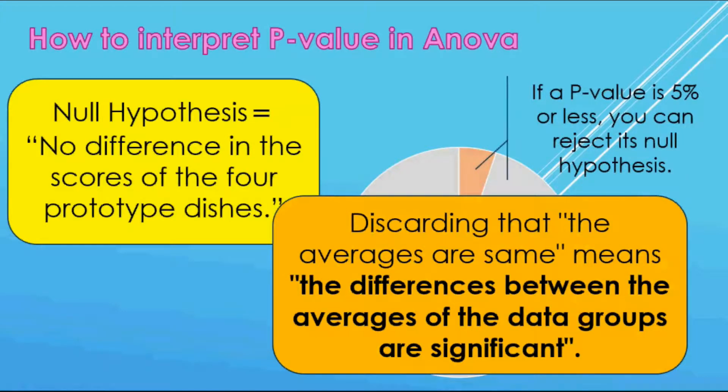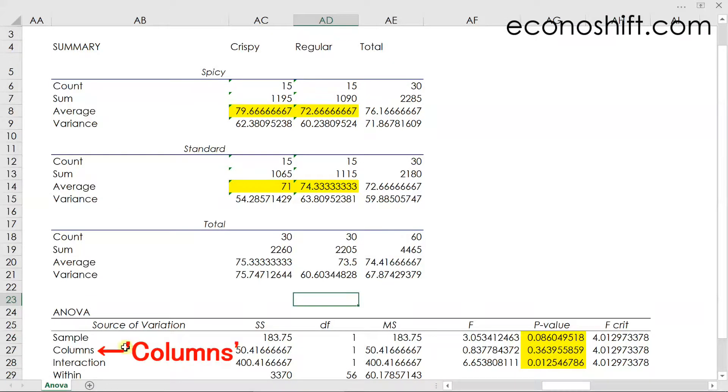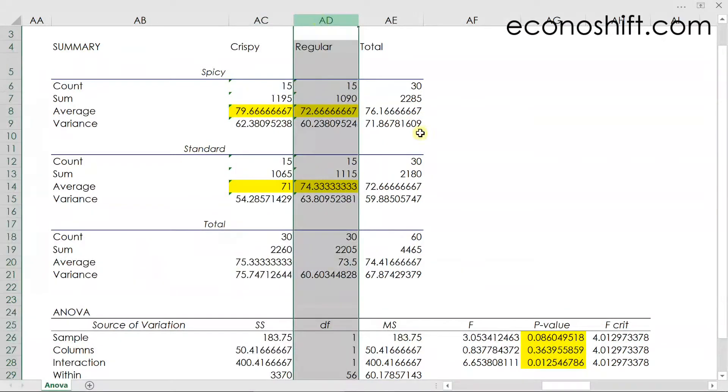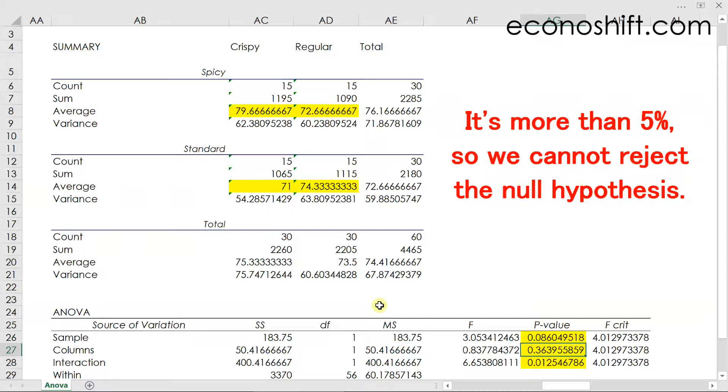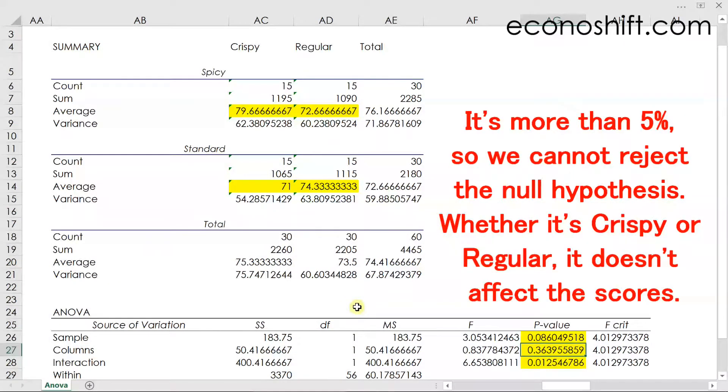With this in mind, let's look at our ANOVA table. It says columns here that refer to the vertical direction, in our case, crispy and regular, in that contents. In the columns, their p-value is 0.36, which is 36% and more than 5%, so we cannot reject the null hypothesis. In other words, it means that whether it is crispy or regular, it doesn't affect the scores.